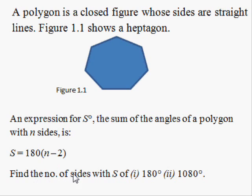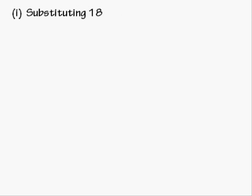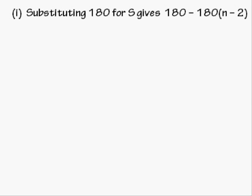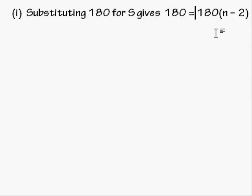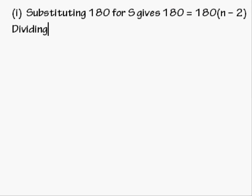The two cases are angle sums of 1080 and 1800. Substituting 1080 for s gives: 1080 equals 180 times n minus 2. Dividing both sides by 180.